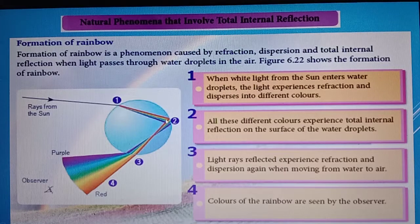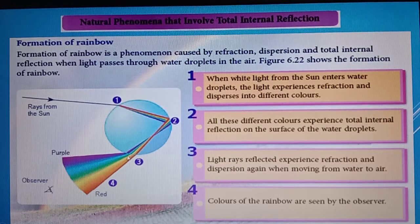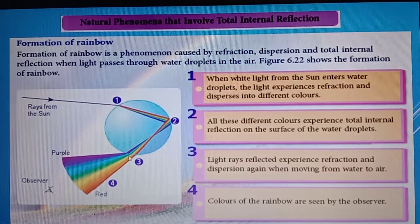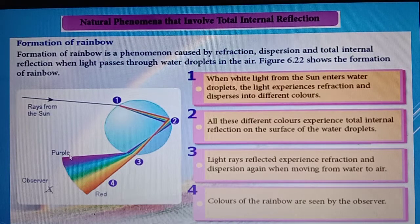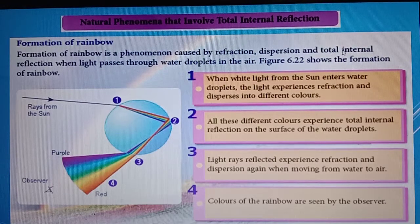Here you can see total internal reflection. When the light rays reach point 3, they experience refraction and dispersion again when moving from water to air. Different colors refract to different angles, so the colors spread out into 7 colors. That is how you see the beautiful rainbow formed due to refraction, dispersion, and total internal reflection.